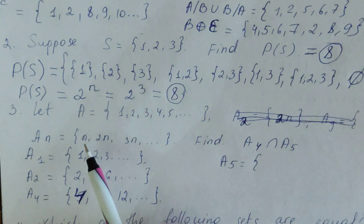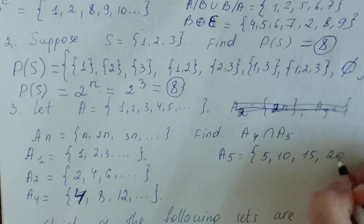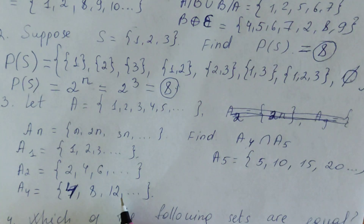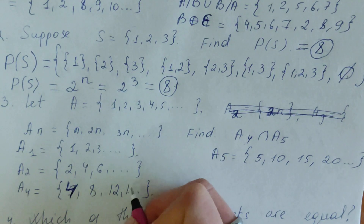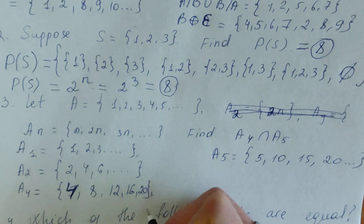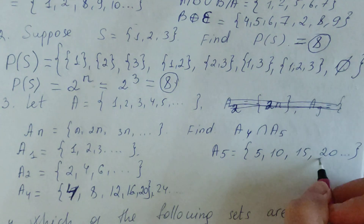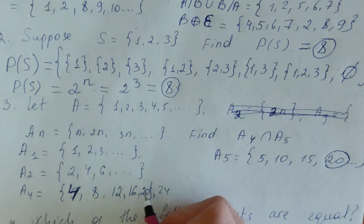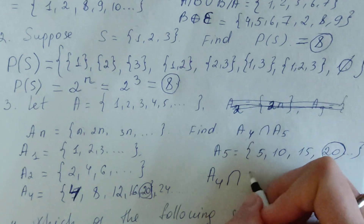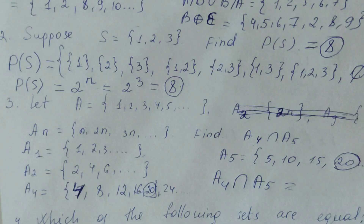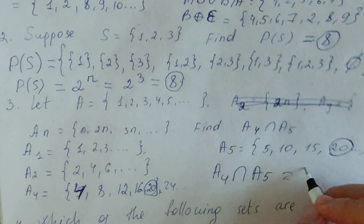What about A5? A5 equals {5, 10, 15, 20, ...} — multiples of 5. If we continue A4 we get {4, 8, 12, 16, 20, 24, ...} — multiples of 4. What are the common elements of A4 and A5? Looking at both sets: A4 has 20 and A5 has 20. So A4 intersection A5 — the common element — is 20, which is the least common multiple of 4 and 5.